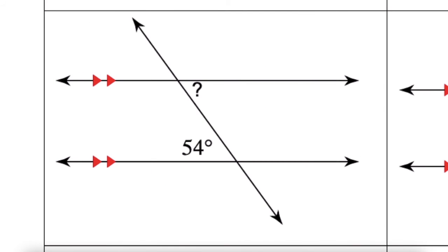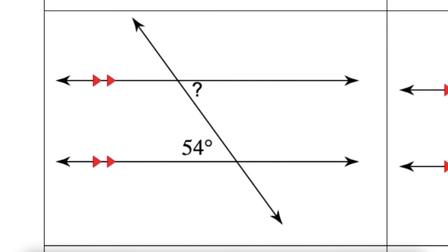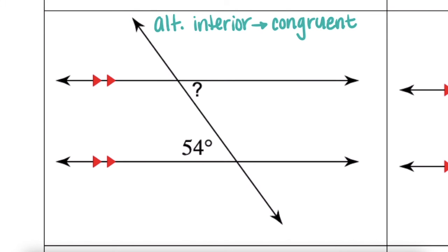For this one, the angles are on opposite sides of the transversal and inside the parallel lines — these are alternate interior angles. From our exploration, we know these are congruent when lines are parallel. So if this angle measures 54 degrees, the missing angle also measures 54 degrees.